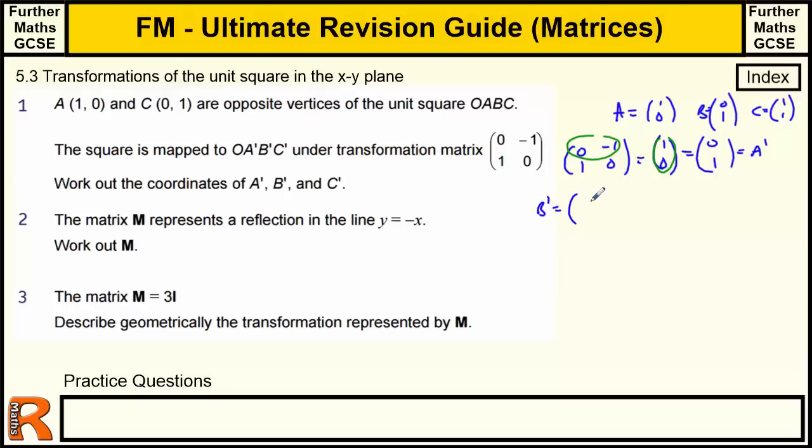And then we do B. B dashed is going to be equal to 1 times 0 and we've got 0 times 0 and minus 1 times 1, so that gives us minus 1. 1 times 0 is 0 plus 0 times 1 is 0, so that's B dashed. And C dashed is going to be, so minus 1 times 1 is minus 1 and 1 times 1 is 1. When you've got the 0s in here, you just ignore those points because they're not going to do anything. So we're just looking at the minus 1 times 1 or the minus 1 times 1 and 1 times 1. Ignore the 0s. So that's A, B, and C dashed under that transformation.